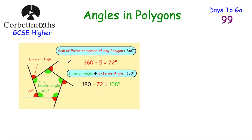We've looked at interior angles — now let's look at exterior angles. Here we have a regular pentagon with interior angles of 108 degrees each. If you carry on each straight side of the pentagon, you get exterior angles shown in red. Because it's a straight line, each exterior angle is 72 degrees (since 108 + 72 = 180). And 5 times 72 equals 360. No matter what polygon you look at, the exterior angles always add together to be 360 degrees.